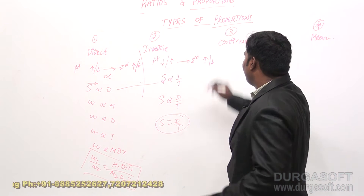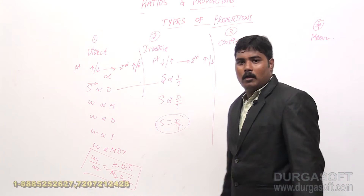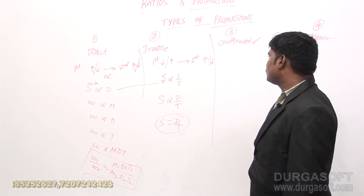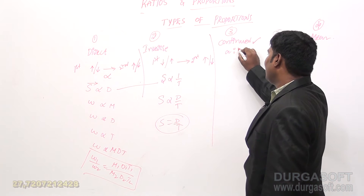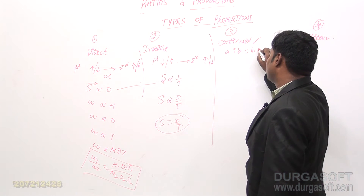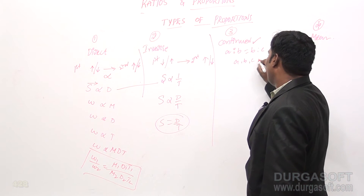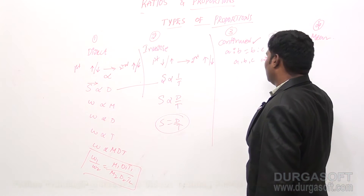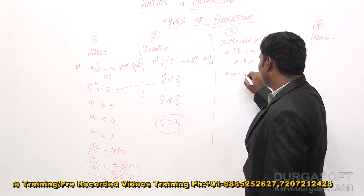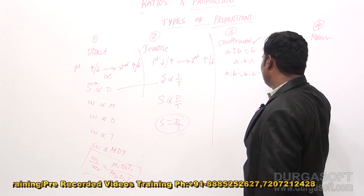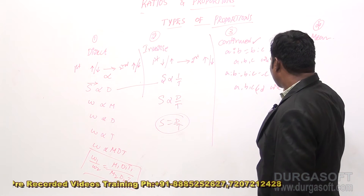Coming to continued proportion: if A is to B equals B is to C, then A, B, C are in continued proportion. If A is to B equals B is to C equals C is to D, then A, B, C, and D are said to be in continued proportion. The condition is: if the ratio of first to second equals second to third equals third to fourth and so on, then those proportionals are said to be in continued proportion.